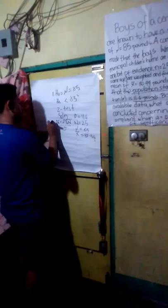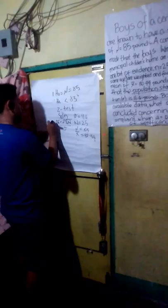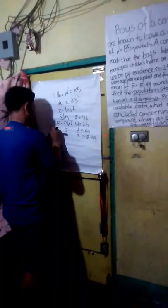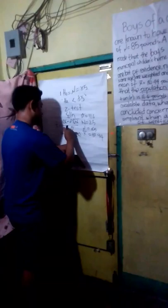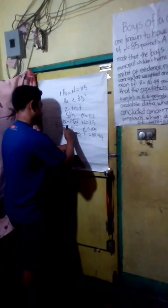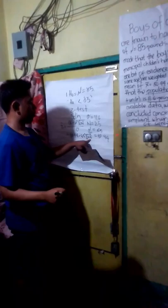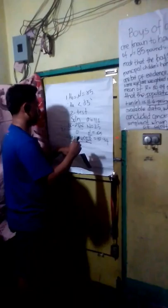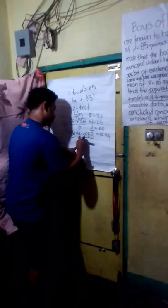Formula: sample mean minus null hypothesis, times square root of n, divided by standard deviation. So, substituting: 80.94 minus 85, times square root of 25, divided by 11.6. So, ang magiging sagot dyan ay negative 1.75.